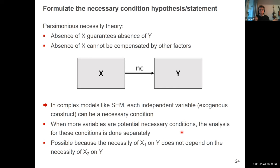This doesn't mean you cannot analyze multiple necessary conditions. In complex models like structural equation modeling, each exogenous construct can be a necessary condition. However, when more variables are potential necessary conditions, the analysis for each condition is done separately, since the necessity of X1 on Y does not depend on the necessity of X2 on Y. In practice, you can use one command that performs the analysis for all conditions, but the analysis itself remains bivariate.